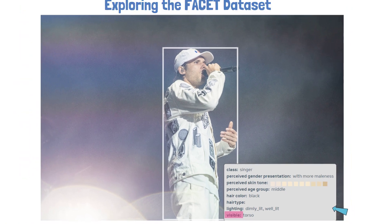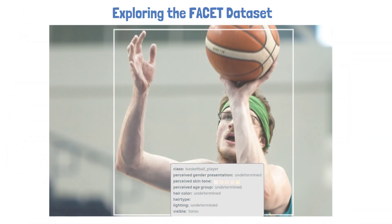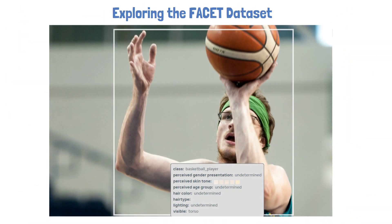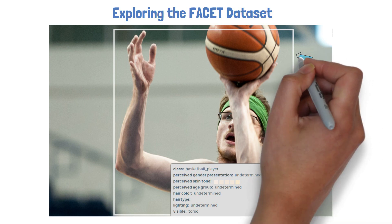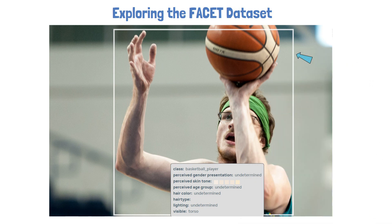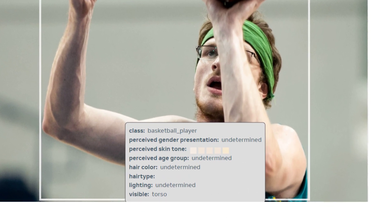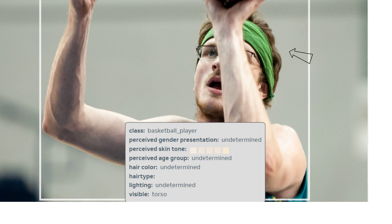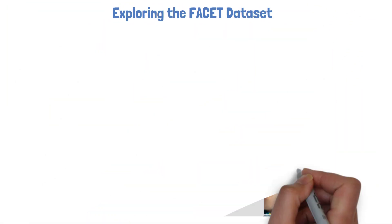Another example is this image of a basketball player, where again we see that the person's location in the image is annotated with a box, and the same annotations as before. More of them are missing for this example, as we can see with the 'undetermined' value.